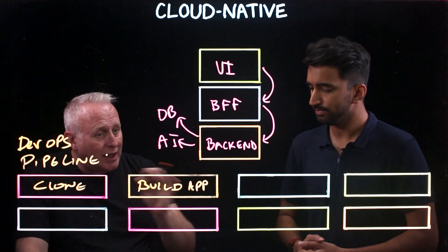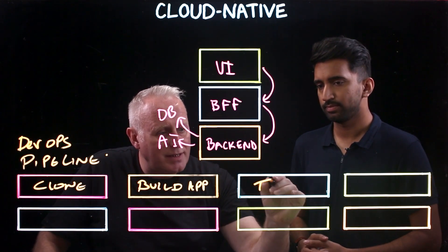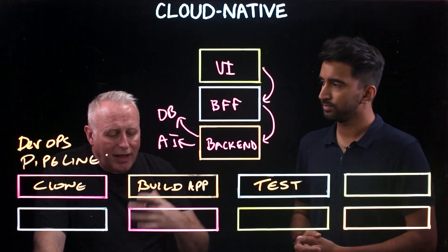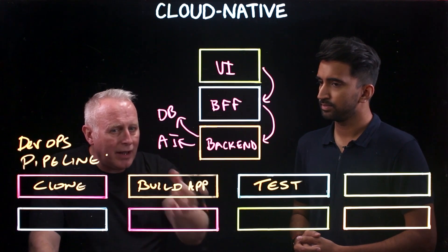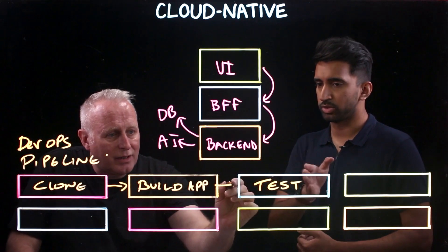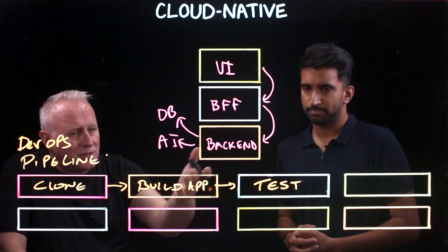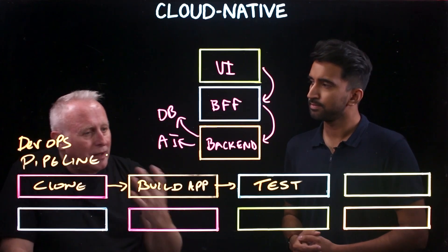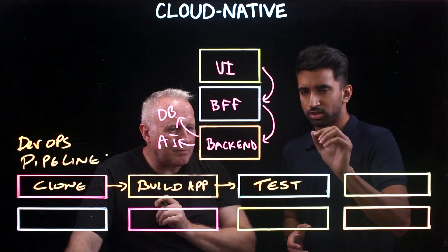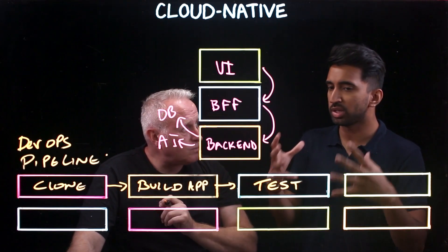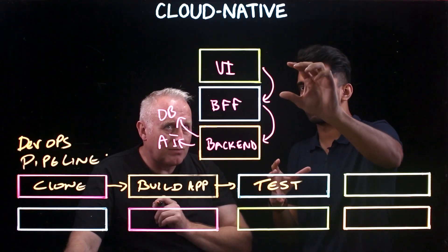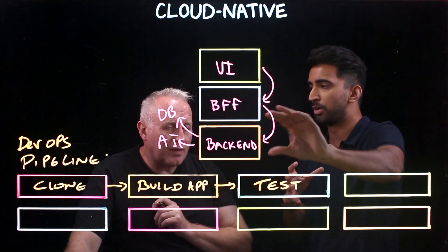The next step is to run a set of tests — unit tests against the code and code coverage validation — to determine whether any code changes made in the pipeline are valid. These steps move sequentially, and if any one fails, it will stop the build and inform the developer to go back and fix the code or tests. At this level, we're doing unit tests within the app context, not considering connections between different components.